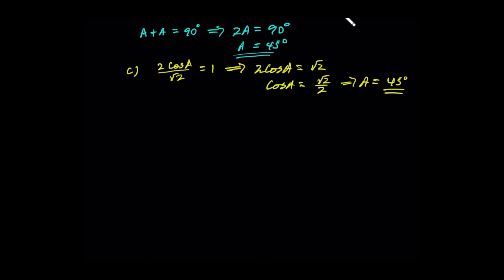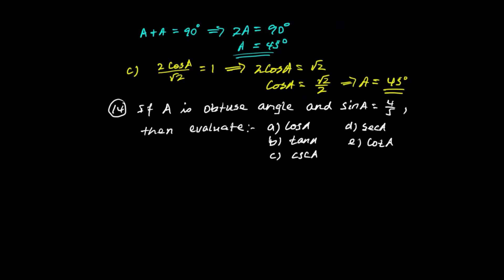If A is an obtuse angle — an angle greater than 90 and less than 180 — and sin A is given as 4 over 5. For an obtuse angle, an angle greater than 90 degrees, sine is positive: 4 over 5. Now evaluate cos A. For an obtuse angle greater than 90 degrees, cosine is negative.